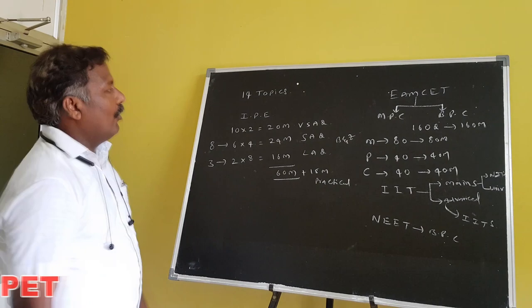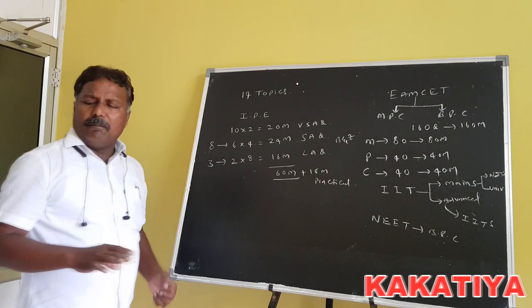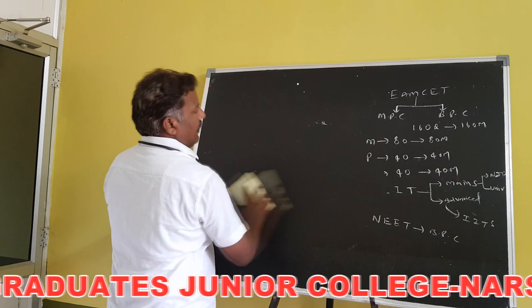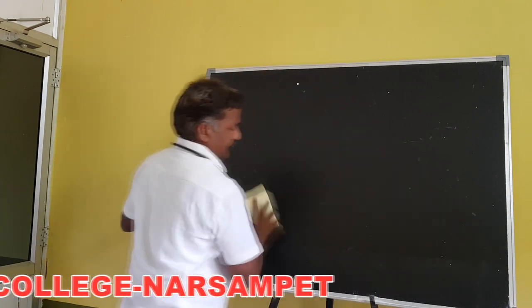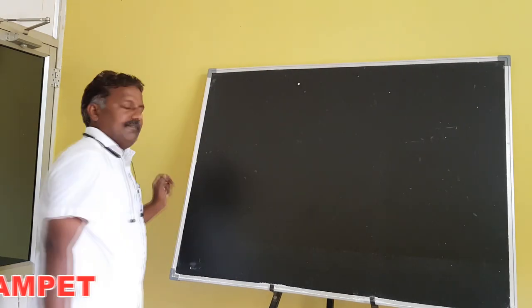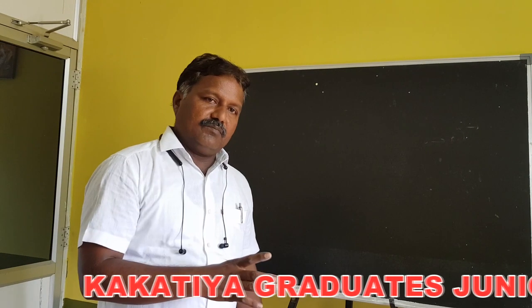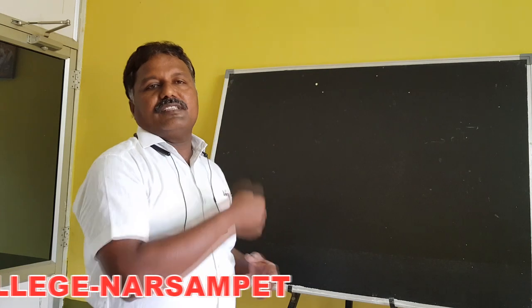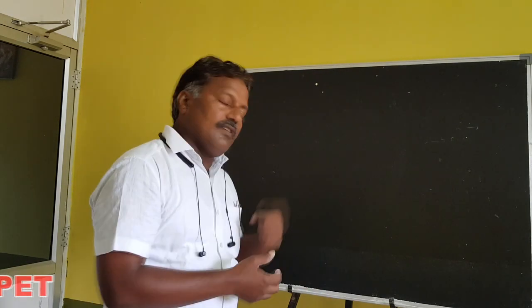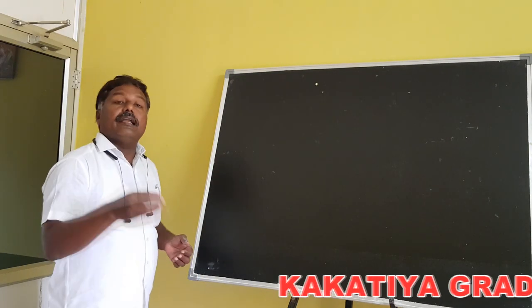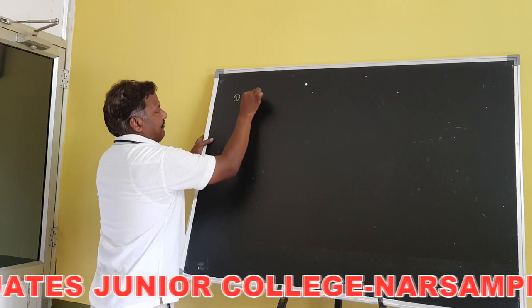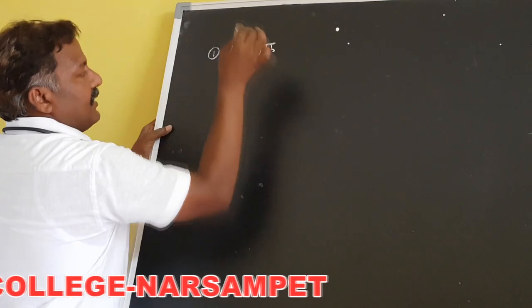Today we discuss the basic concepts of physics. In first-year physics, there are four important physical quantities. A physical quantity is simply a measurable quantity — any quantity that can be measured is called a physical quantity. Examples include length, mass, time, and temperature. The first one is length, denoted by 'L', and its common unit is the meter.